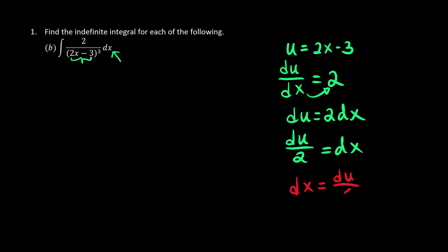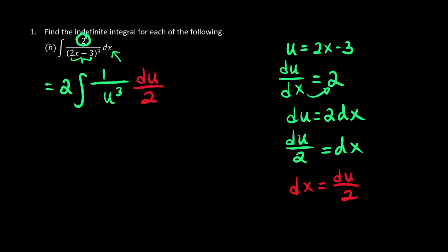So we come to the conclusion that dx is du over 2, and now we are good to go. Since we have a constant on top, we can take the constant out first and then integrate. The expression at the bottom is already substituted by u, so we have u to the power of 3, and our dx is basically just du over 2.